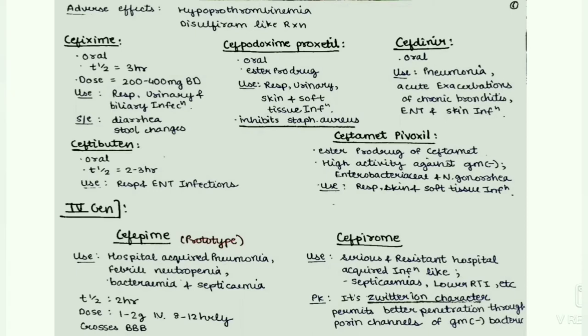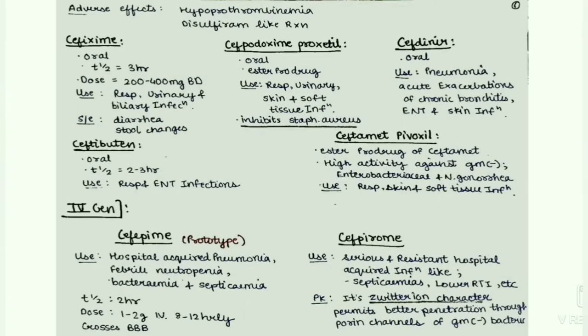Next, cefixime. It is given orally. T-half is 3 hours, dose 200–400 mg twice a day. Use: respiratory, urinary, and biliary tract infections. Side effects are diarrhea and stool changes. Next, cefpodoxime proxetil — it is given orally, it is an ester product, and is used in respiratory, urinary, skin, and soft tissue infections. It inhibits Staph aureus.